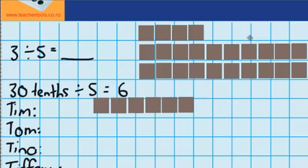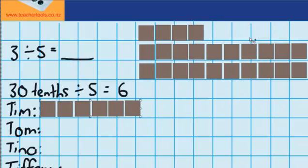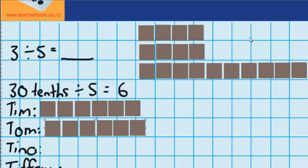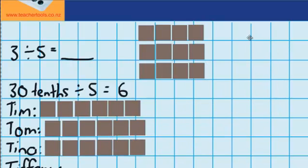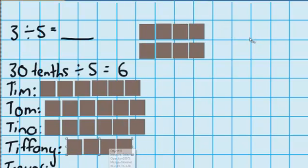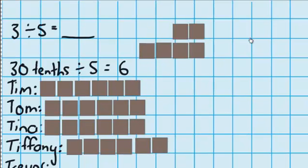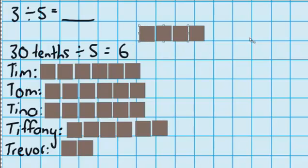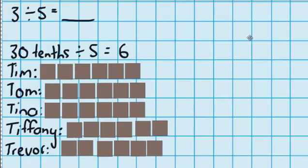So here's 6 for Tim, 6 for Tom, 6 for Tina, and 6 for Tiffany which was 4 plus these 2 which makes 6 for here and 6 for Trevor which I can do by giving him those 2 and these 4.